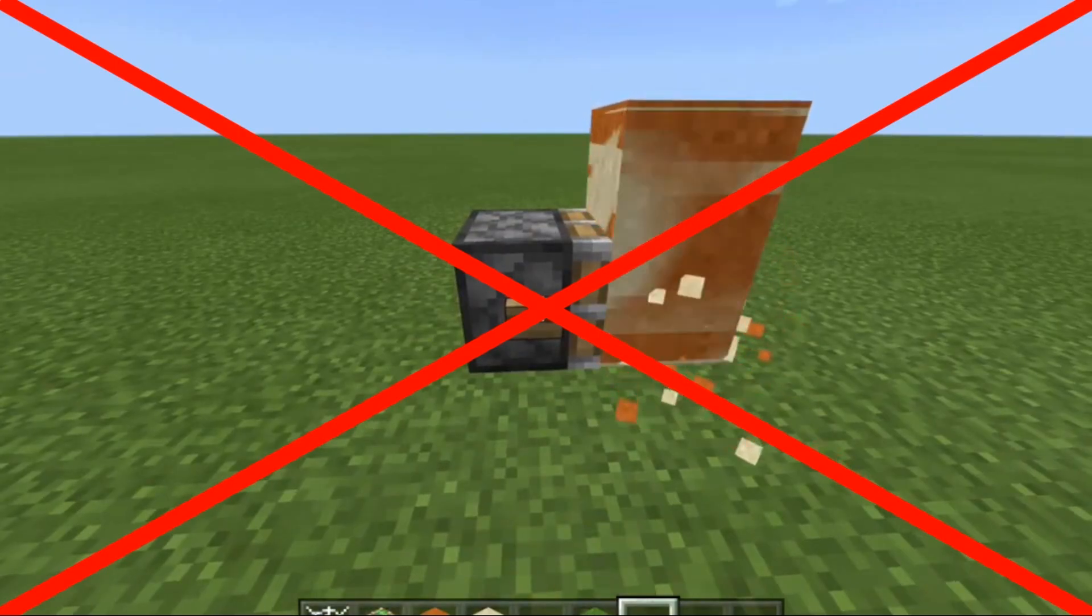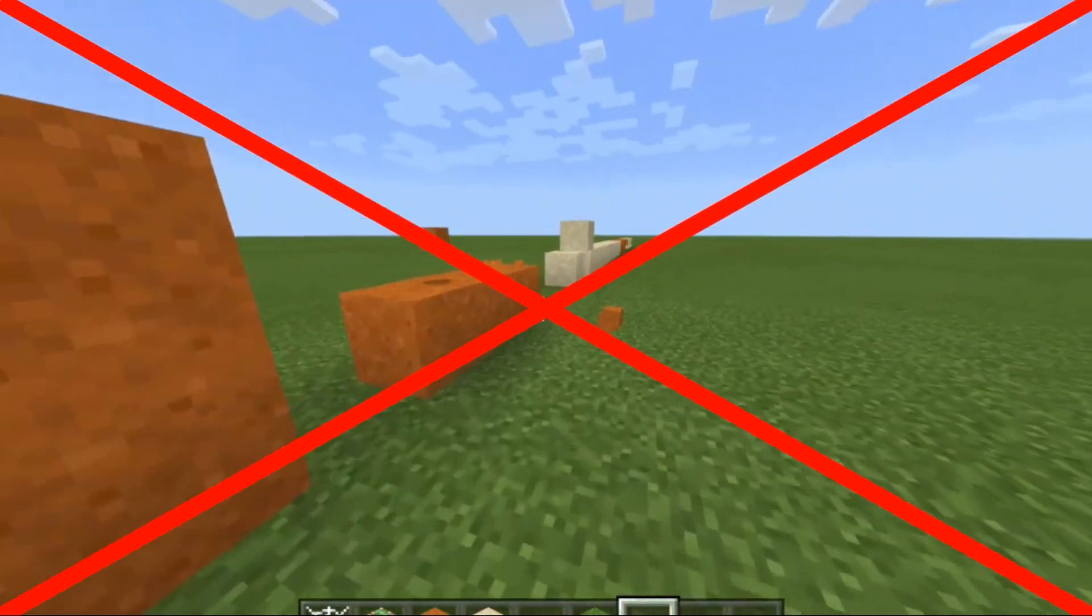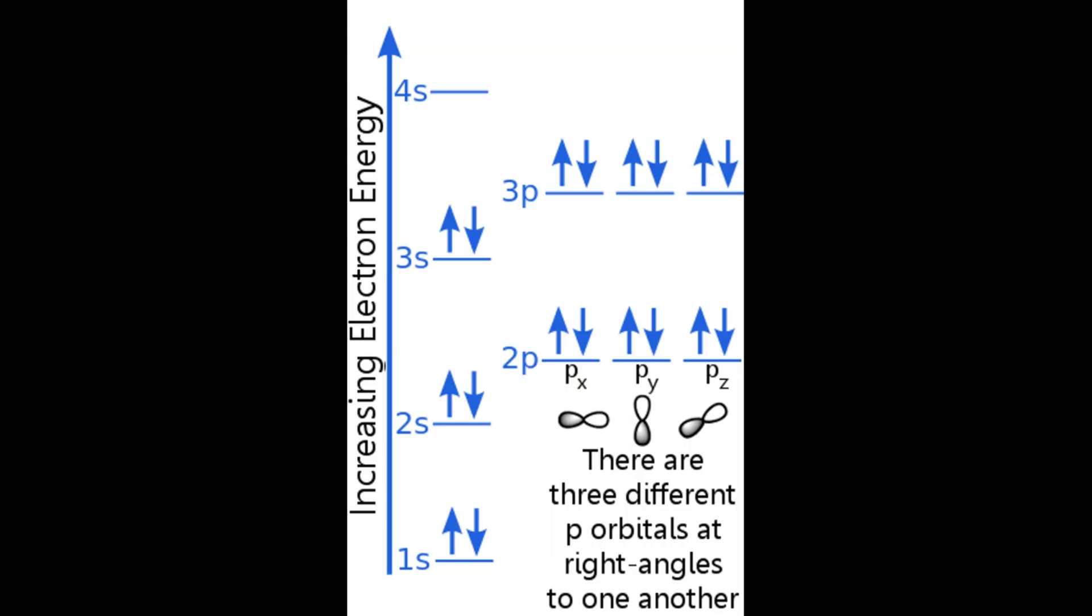Thus, no two fermions can be in the same place at the same time. For example, no two electrons orbiting a nucleus can have the same orbital size, shape, orientation, or spin.